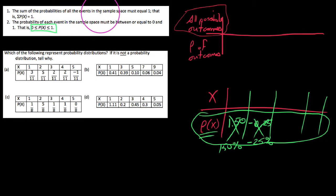It says the sum of the probabilities of all the events in the sample space must equal 1. That is, if we were to add up all the probabilities in this distribution, they should come out to be 1. So if we add up this last row down here, all of our probabilities, we should get 1.